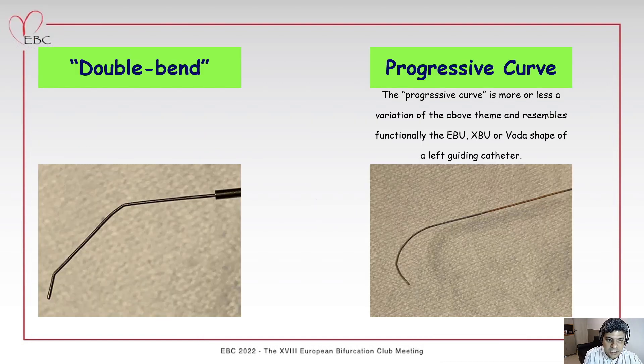These are two important wire shapes to access difficult and angulated side branches: the double bend curve and the progressive curve, as you can see here.